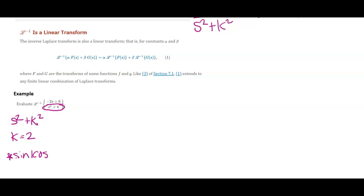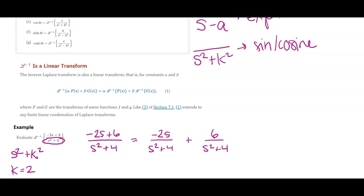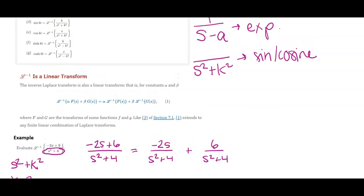Now, one thing that I can do with fractions like this is I can rewrite negative 2S plus 6 over S squared plus 4 as two separate fractions with the same denominator. Then I notice that I have an S over S squared plus 4 where K is 2.